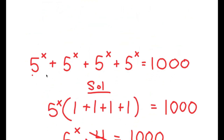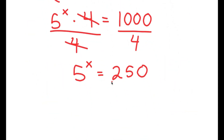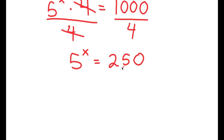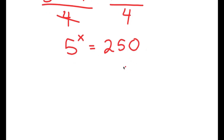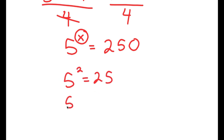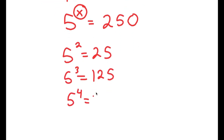So from this large equation, we got up to an equation that is significantly smaller. We have 5 to the power of x equals 250, and just at first glance we can tell that x is not going to be a whole number, because 5 squared is 25, 5 to the power of 3 is 125, and 5 to the power of 4 is 125 times 5, which is 625.